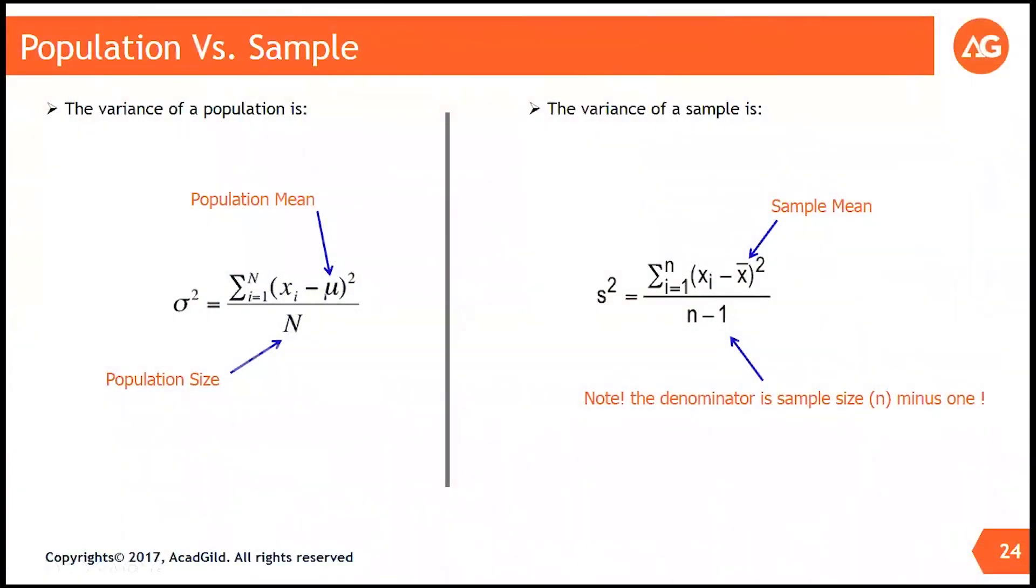And when we calculate the sample mean x bar, we divide it by n. In that case, we do not subtract 1. But when we calculate the sample variance, we always subtract the sample size by 1.